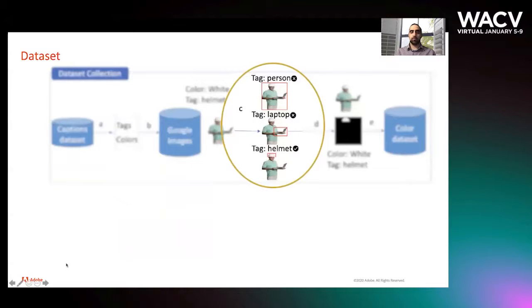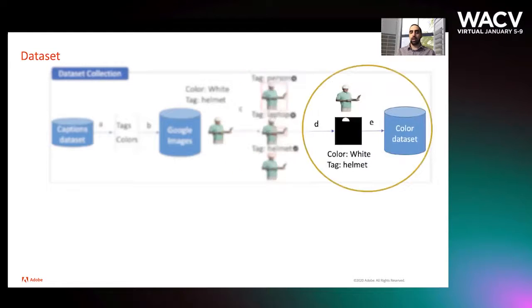Then for every downloaded image we apply object detection. So here we have three different objects detected: person, laptop, and helmet. If the tag matches with the query tag, helmet in this case, then we apply mask extraction from the bounding box. Now we have the original image, a mask, a color, and the tag, and this way we can have a dataset with color.